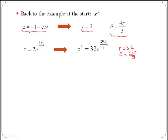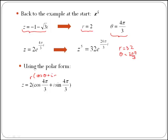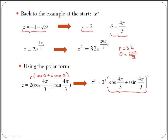Now let's do the same using the polar form and De Moivre's formula. In polar form, z equals 2 times (cos 4π/3 plus i sin 4π/3). Calculating z to the 5 means raising 2 to the power of 5, and also raising (cos 4π/3 plus i sin 4π/3) to the power of 5. Using the property that (a times b) to the n equals a to the n times b to the n, z to the 5 equals 2 to the 5 times the whole bracket to the power of 5.